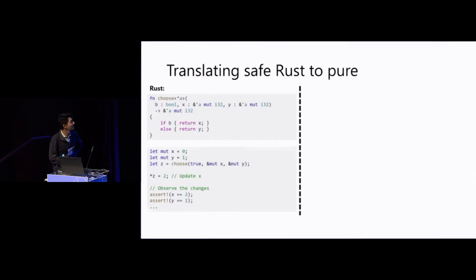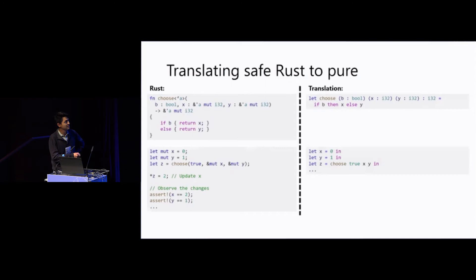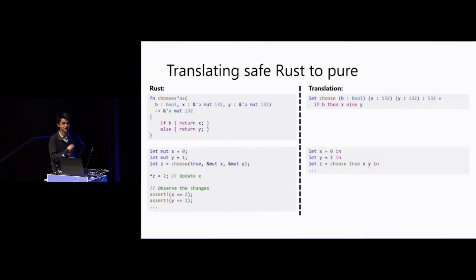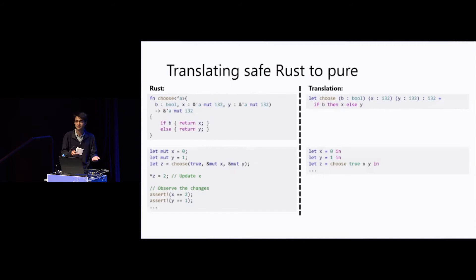Let's get back to the 'choose' example to walk through the translation step by step. We introduce let-bindings x, y, and z, where z uses a purified version of the 'choose' function — basically 'choose' but with borrows removed, since those don't make sense in a pure world. For the in-place update, since z is alive we don't have access to x and y yet, so we don't need to account for that update on x. We simply say: z now equals 2.